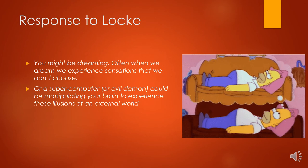But then the sceptics come back and respond to Locke, arguing: how do you know that you're not dreaming? We often dream — we have sensations of things that are unpleasant, bad dreams, things that we don't choose. Or how do you know that a supercomputer, or from Descartes, an evil demon, is actually manipulating your brain just to experience illusions of an external world? How can we know for certain that an external world exists if we can't access it directly?